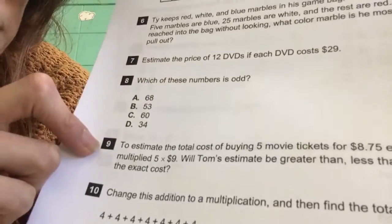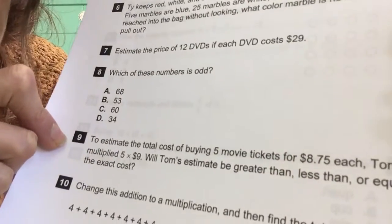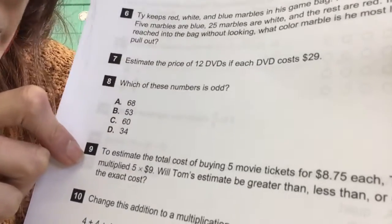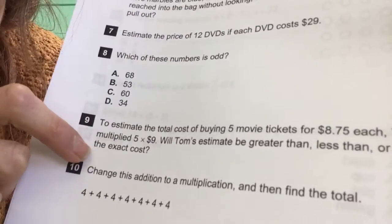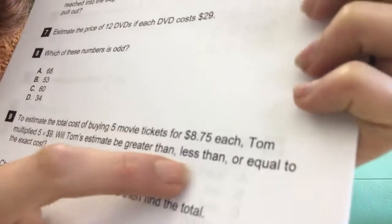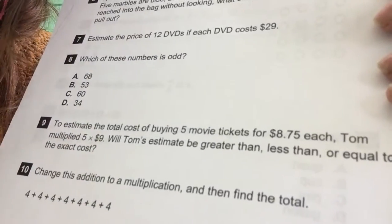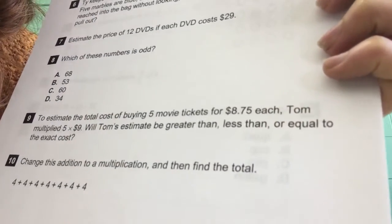Number nine. To estimate the total cost of buying five movie tickets for $8.25 each, Tom multiplied five by $9. Will Tom's estimate be greater than, less than, or equal to the exact cost? You tell me. Greater than, less than, or equal to.